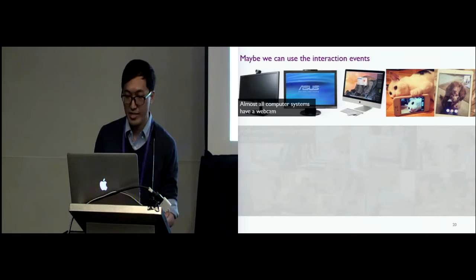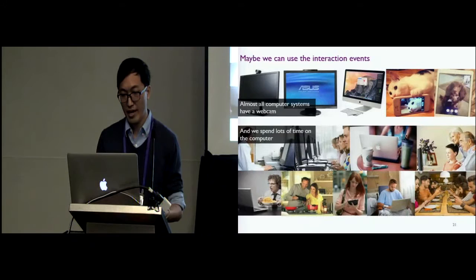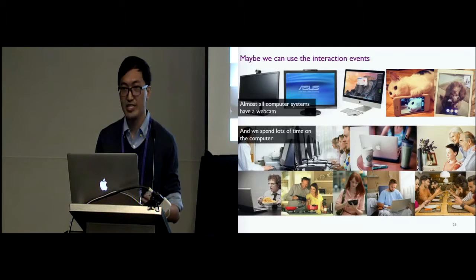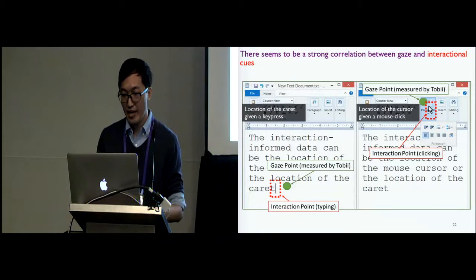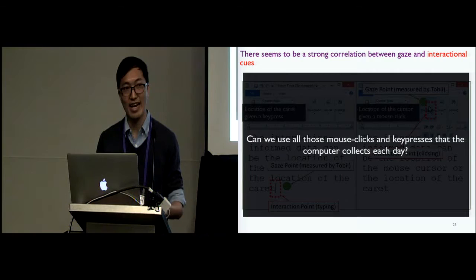So this is what we thought. Nowadays, webcams are everywhere, and practically every computer system comes with a camera. People spend a lot of time on computers, and this means there is a lot of interaction data that's generated every single day. Based on our observation in the pilot study, there seemed to be a strong correlation between the gaze and interaction cue, i.e., the location of typing caret or the mouse cursor. This brings us to the question: can we use the mouse clicks and key presses that the computer collects?